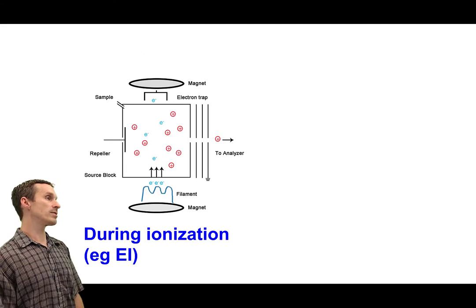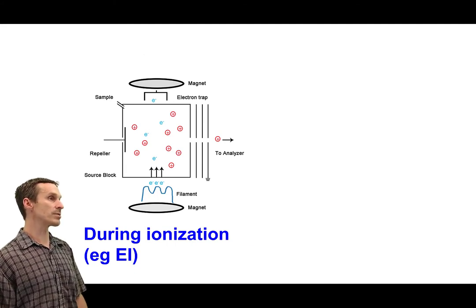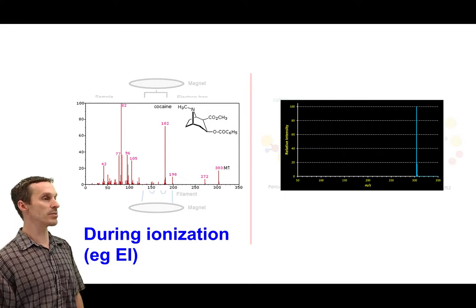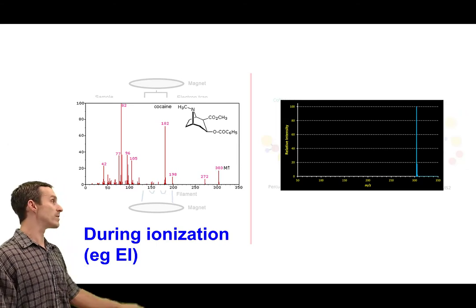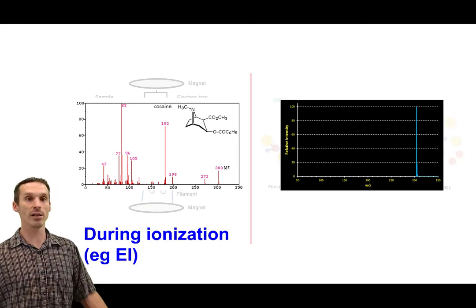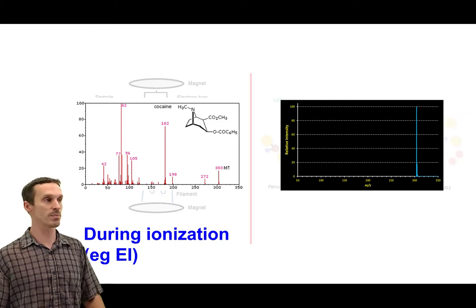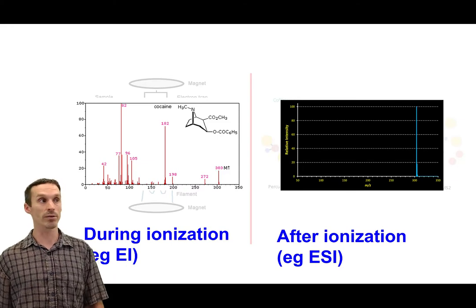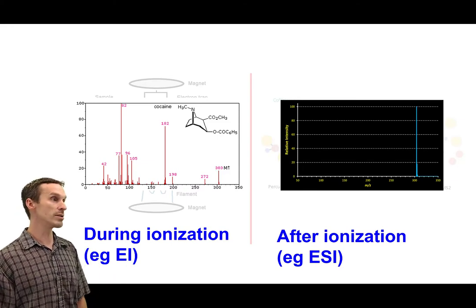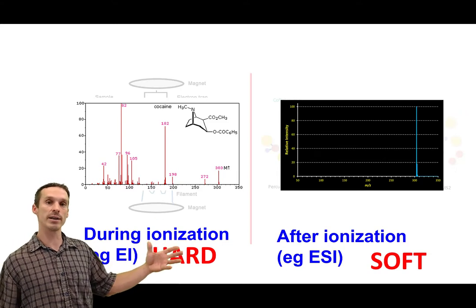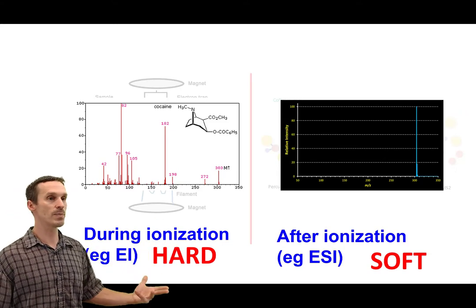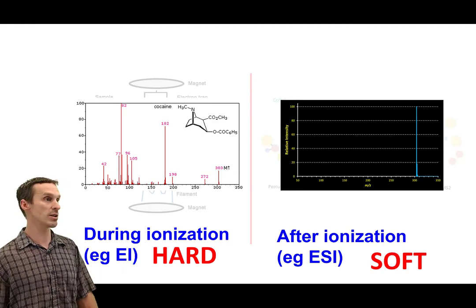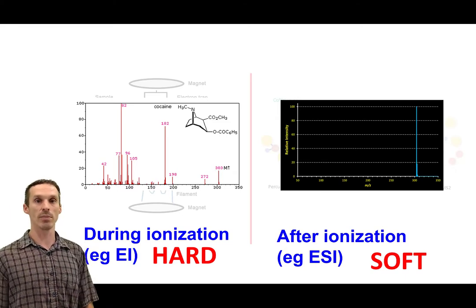So just to show you the difference that these two different ionization methods will produce. Looking at the spectrum of cocaine here, there's all kinds of fragment ions that are produced. A little bit of the intact molecule is visible at 303, but everything else is just pieces of that molecule. It's basically being blown up to bits. When we look at electrospray ionization we tend to just see the intact molecule, 304 in this case. We tend to call these things hard ionization versus soft ionization. Hard just basically means lots of energy, so much so that it tends to crack the molecule into pieces. And soft is we just have enough to produce the intact molecule.